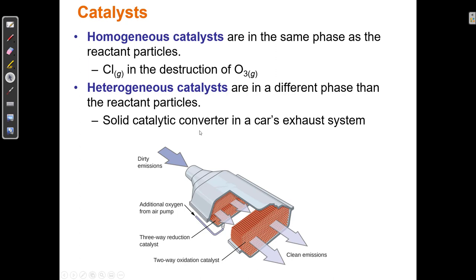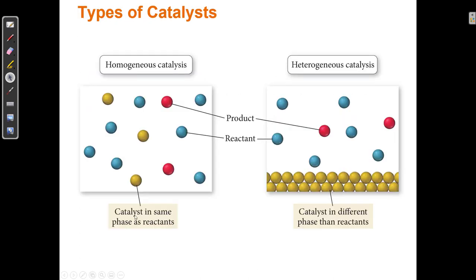Another example is the catalytic converter in a car's exhaust system. A catalytic converter is a solid piece of metal, and the gases that pass through it are converted from dirty gases into cleaner gases. That's a heterogeneous catalyst because the catalyst is solid and the reactants are gases — they're in different phases. Homogeneous catalysts will be dissolved in solution, and heterogeneous catalysts will generally be a surface, like a solid in a gas or liquid. The gas or liquid particles grab onto the surface, which either weakens the bonds in the reactant or puts them in the proper orientation so that a reactant particle that bumps into it will be perfectly aligned to make that bond — adsorbed to the catalyst surface.